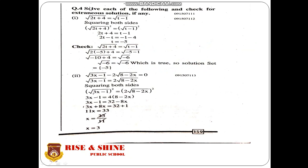In review exercise, first we start from question number four: solve each of the following and check for the extraneous solution if any. We have under root of (2t + 4) equals to the square root of (t - 1). First we take the squaring on both sides. After this we have 2t + 4 is equal to t - 1. Now shift the t values to the left hand side and constant values to the right hand side: 2t minus t equals t.